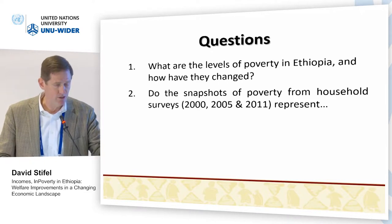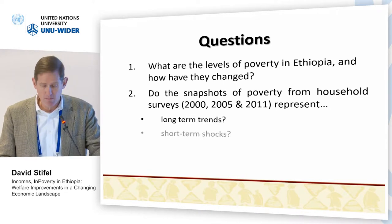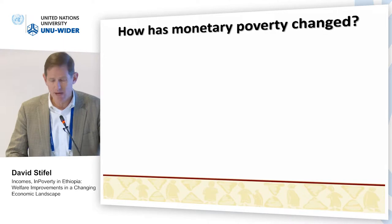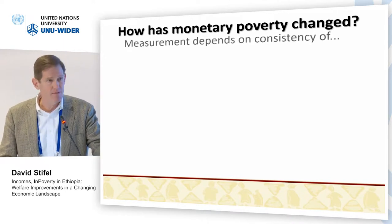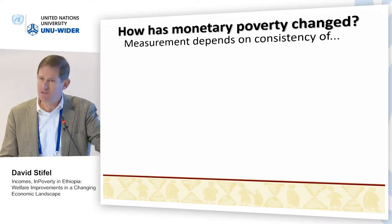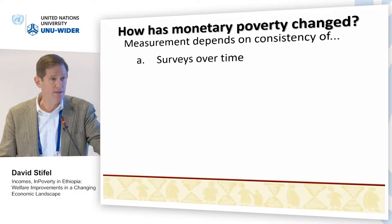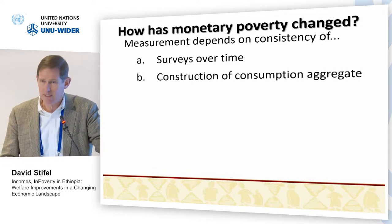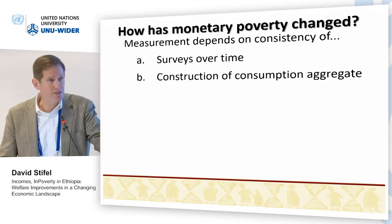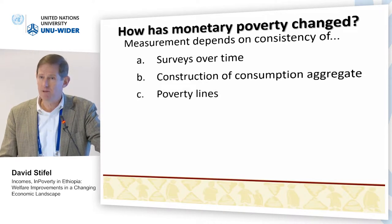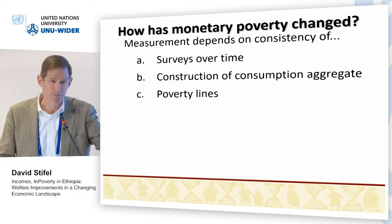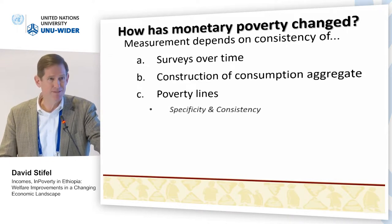When we ask about how monetary poverty has changed using these household surveys, this measurement really depends on the consistency of a number of things: first, the surveys over time — are the questionnaires similar, and what about the sampling? Then, once you have the data, do you construct the consumption aggregate in a similar manner? And then the poverty line is always that tricky next step before you can apply an FGT measure, for example. The difficulty here is maintaining both specificity and consistency.